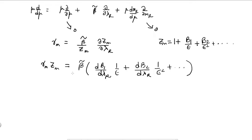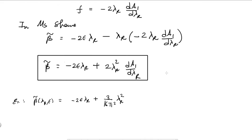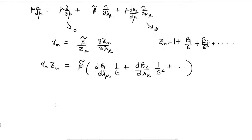Now we should substitute the expressions for beta tilde and zm here, and exactly as before, compare powers of epsilon on both sides order by order. Substituting the expression for beta tilde and comparing, the expression for gamma_m turns out to be minus 2 lambda_r times dv1 over d_lambda_r.